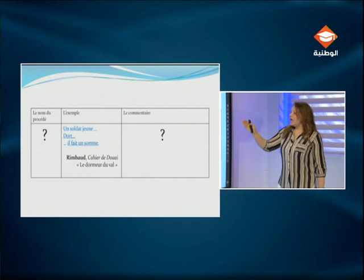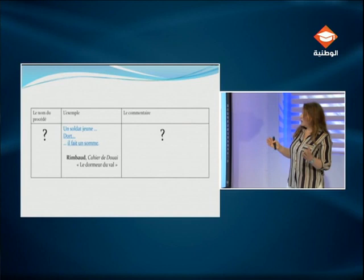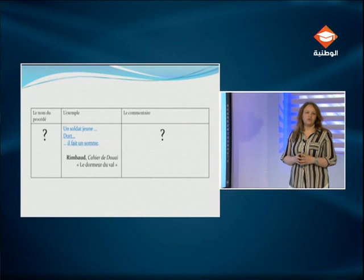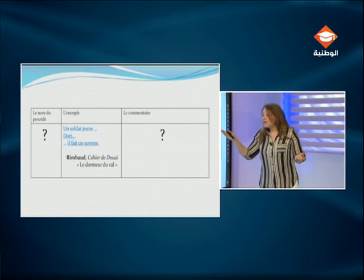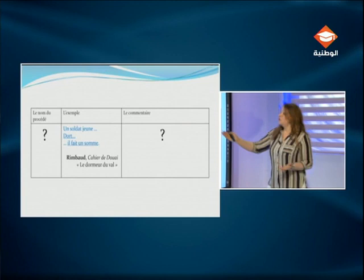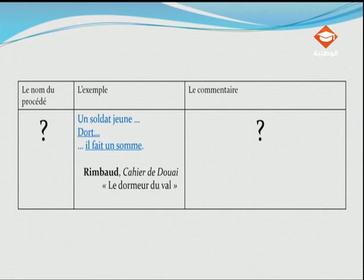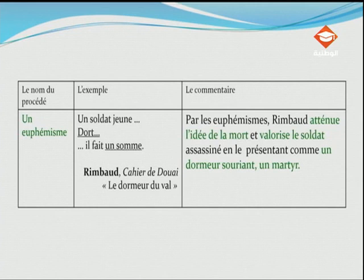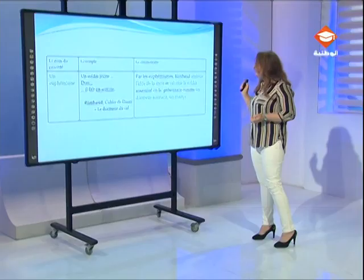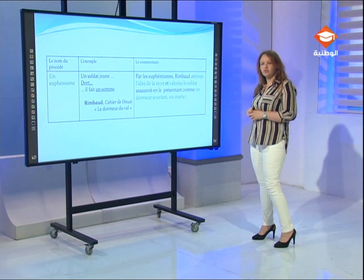Troisième exemple : « Un soldat jeune dort, il fait un somme. » C'est un exemple du poème de Rimbaud, « Le Dormeur du Val ». Dans ce poème, Rimbaud parle d'un soldat assassiné dans la guerre. Au lieu d'employer le verbe « mourir », il dit « le soldat dort », il fait un somme. Le poète n'a pas utilisé le verbe « mourir » mais un autre mot. Le procédé, c'est un euphémisme — son effet est d'atténuer le sens de cette mort et de décrire le soldat positivement. Par les euphémismes, Rimbaud atténue l'idée de la mort et valorise le soldat assassiné en le présentant comme un dormeur souriant, comme un martyr.